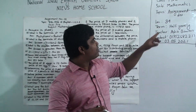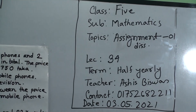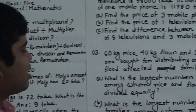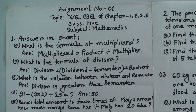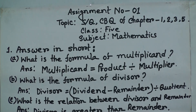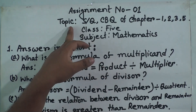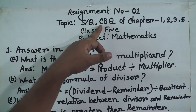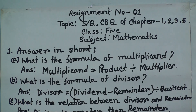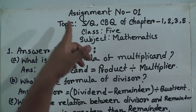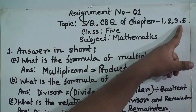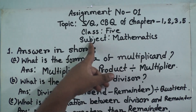Let us start our class. Today is lecture number 34 of the half-yearly, and the topic name is assignment on discussion. Dear students, first write the cover page properly. This is assignment number one — you must write assignment number one. After that write the topic name. The topic name is: Short Questions, CBQ of chapters one, two, three, and five.